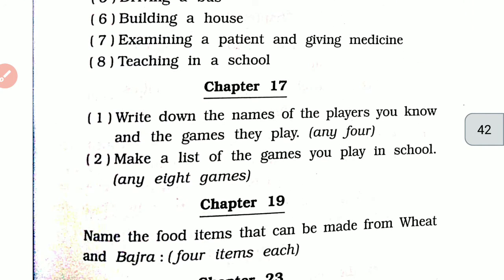Chapter 17. Write down the name of the players you know and the games they play. Player name and sport: Mahendra Singh Dhoni — cricket. Virat Kohli — cricket. Viswanathan Anand — chess. Abhinav Bindra — rifle shooting. PV Sindhu — badminton. Mary Kom — boxing.